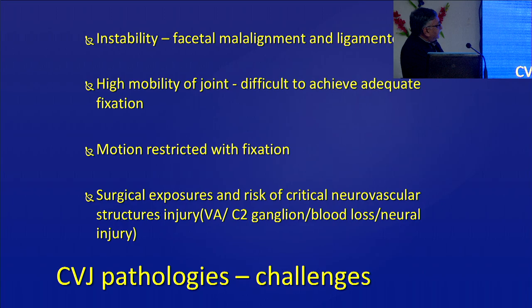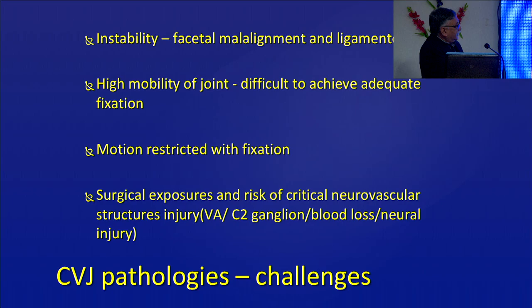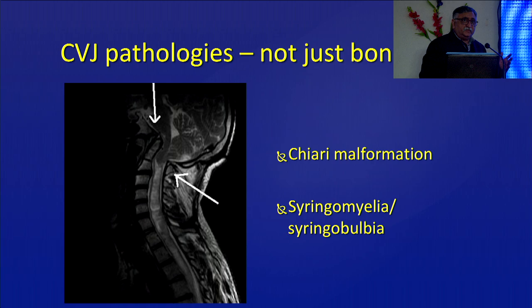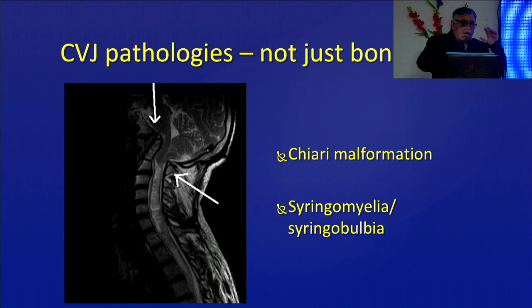Surgical exposure and the various techniques, as just discussed by Deepak, carry a risk for the neurovascular structures, which include the vertebral artery and ganglion. There could be blood loss because of the veins around the vertebral artery, and neural injury if you injure the dura or go into the spinal canal. And that's why these cases are challenging. On top of that, it might not just be bone — there may be a Chiari or Syringomyelia and Syringobulbia.